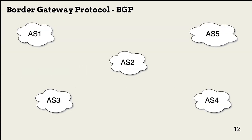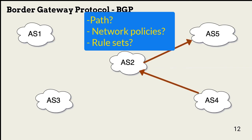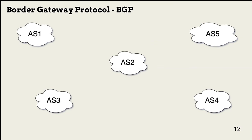The Border Gateway Protocol, or BGP, is an exterior gateway protocol. It manages routing between ASs and makes routing decisions based on paths, network policies, and rule sets.